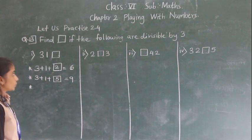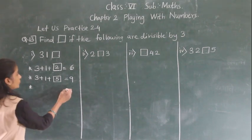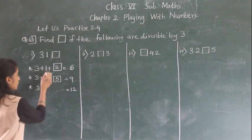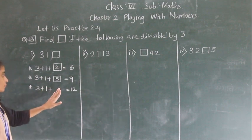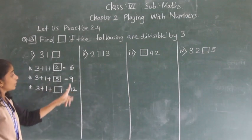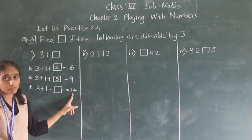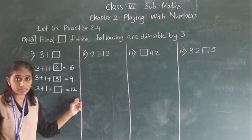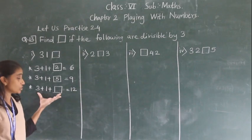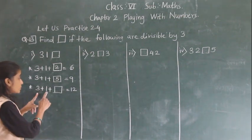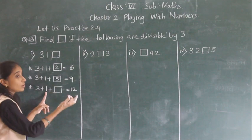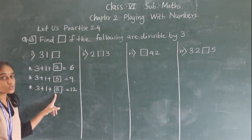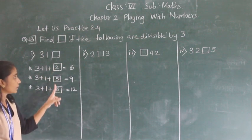What is the next multiple of 3 after 9? 12. 3 plus 1 is 4. 4 plus 8 is 12. And 12 is a multiple of 3, so it will be divisible by 3. Sum of the digits must be divisible by 3. So, which numbers can come in the place of the box? 2, 5, and 8.